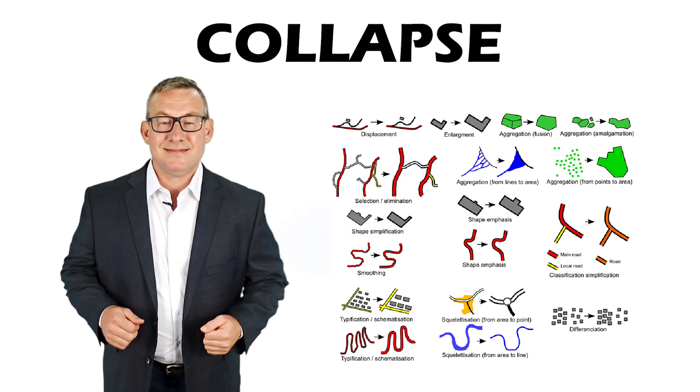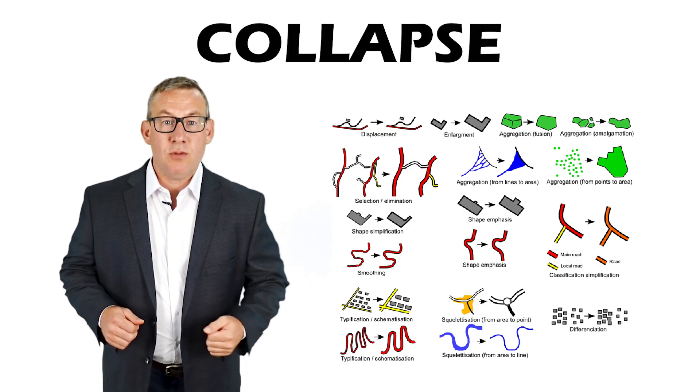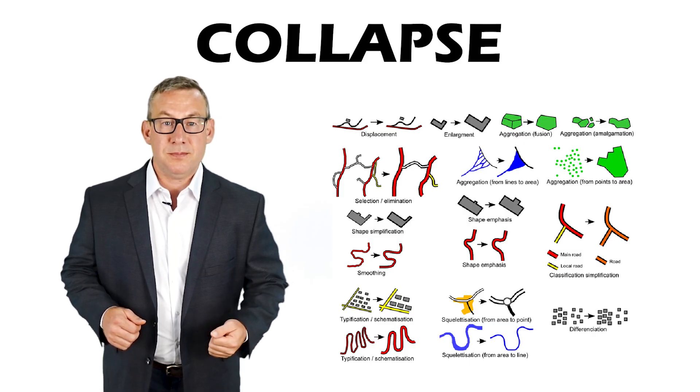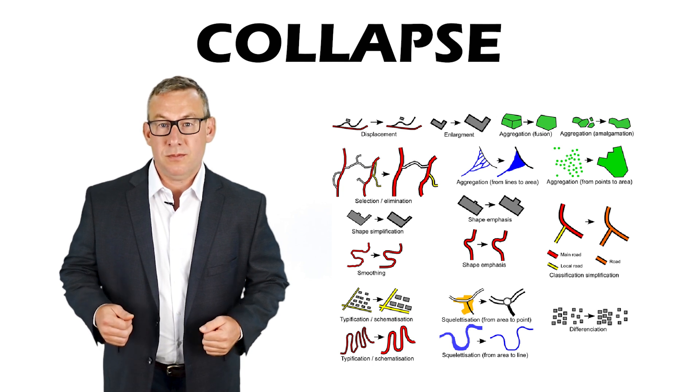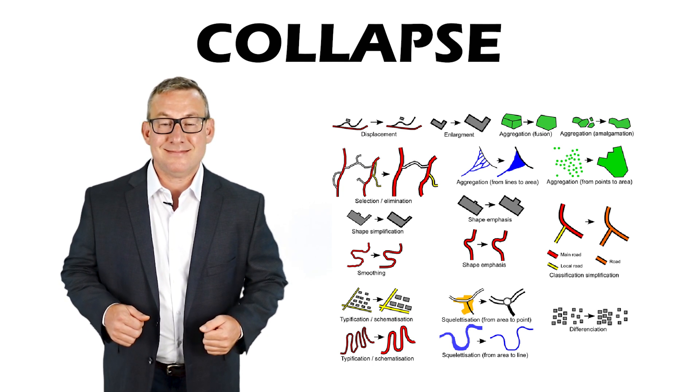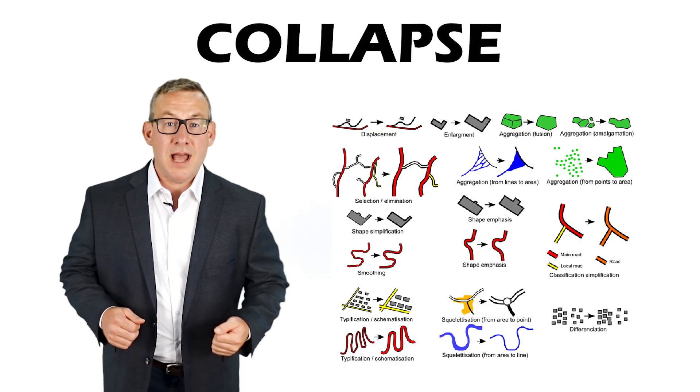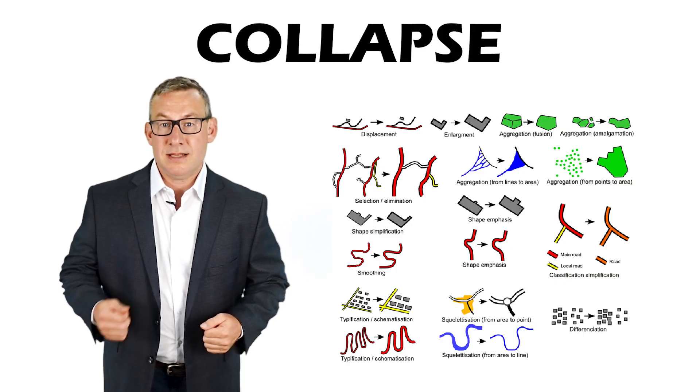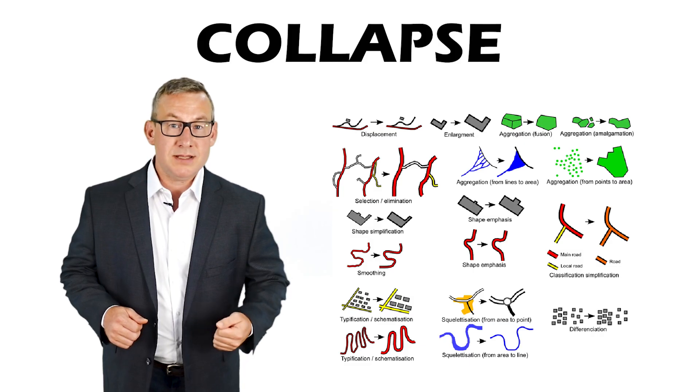Collapse reduces the dimension of a feature. For example, representing a city with a point. Collapse is also known as symbolize and sequelatization.